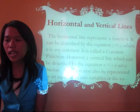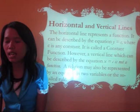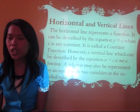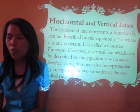Regarding horizontal and vertical lines: a horizontal line represents a function. It can be described by the equation y is equal to c, where c is any constant — this is called the constant function. However, a vertical line, which can be described by the equation x is equal to c, is not a function. A relation may also be represented by an equation in two variables, also called the rule.